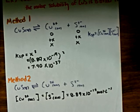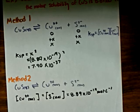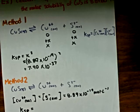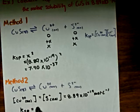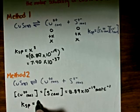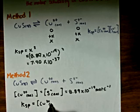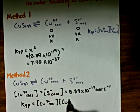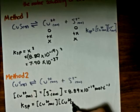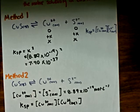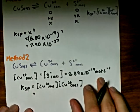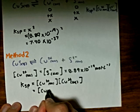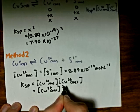Therefore, we can actually rewrite the equilibrium expression as being equal to the concentration of the copper ions times the concentration of the copper ions, because the concentration of the copper ions is equal to the concentration of the sulfide ions, which is just equal to the concentration of the copper ions squared.